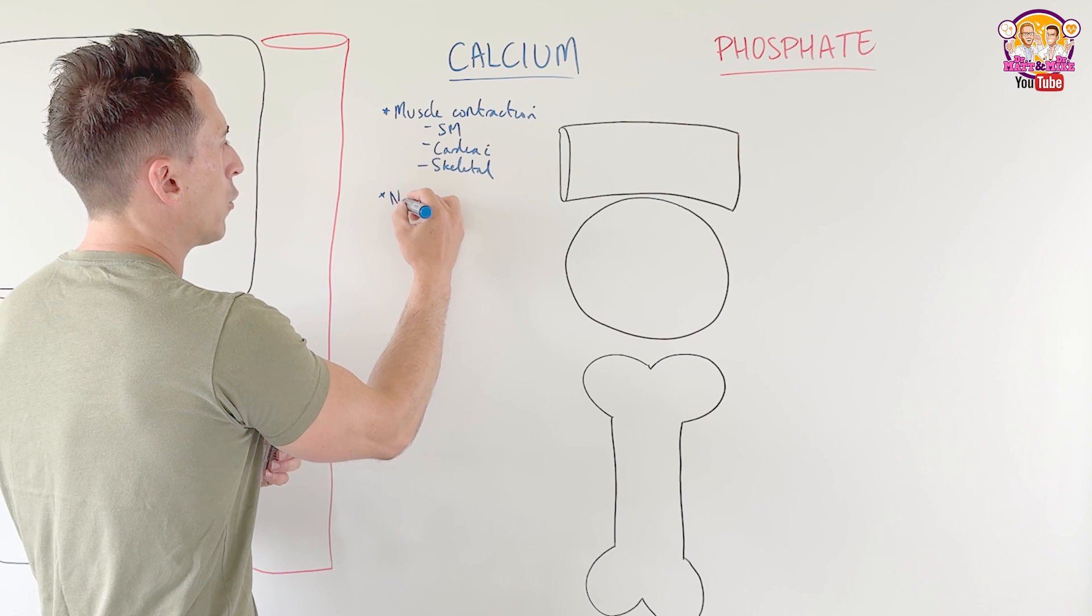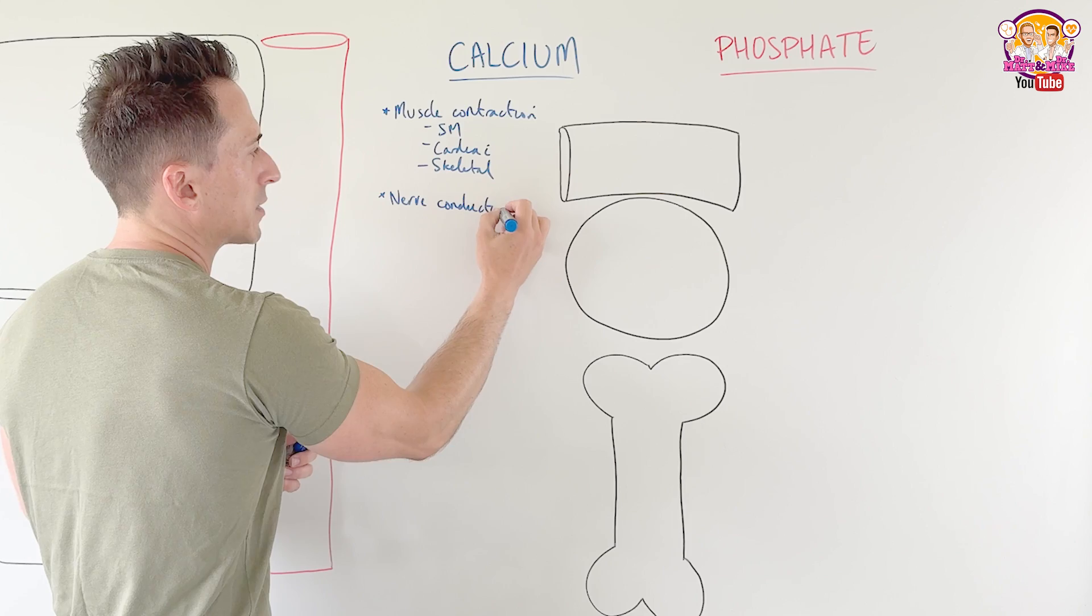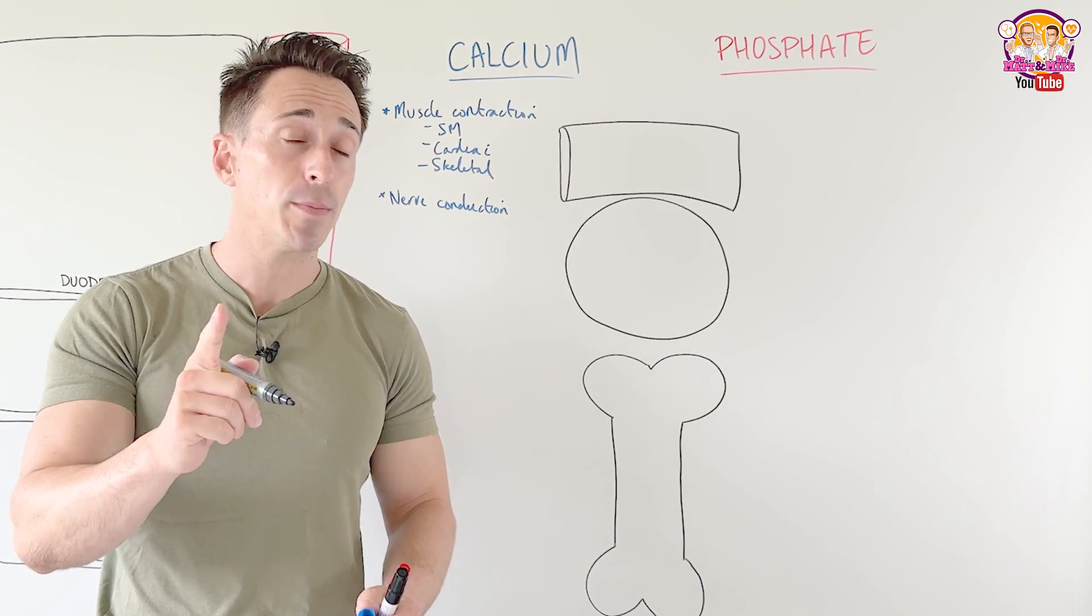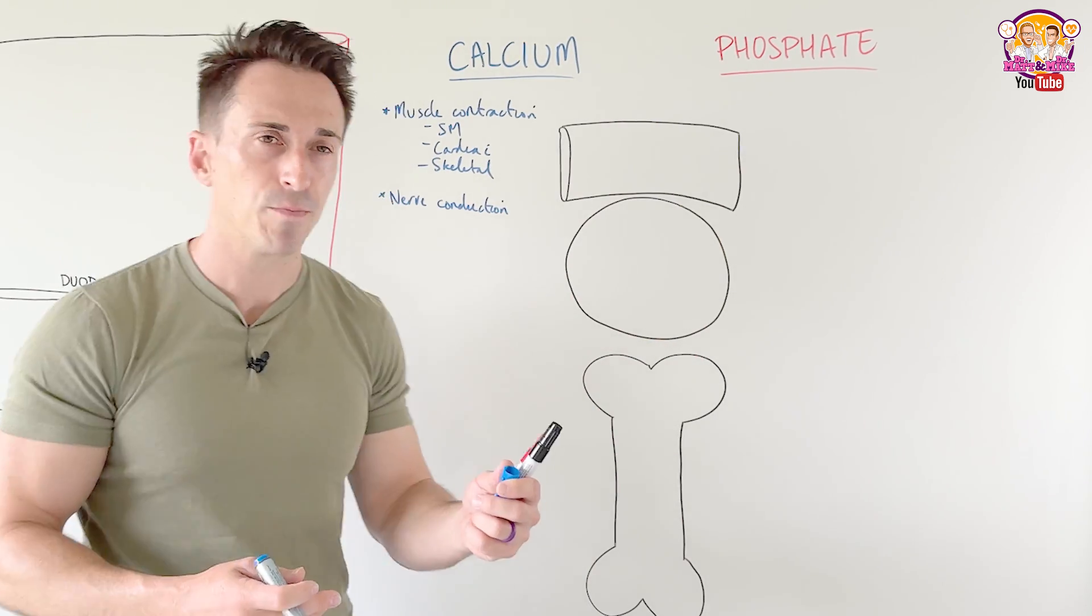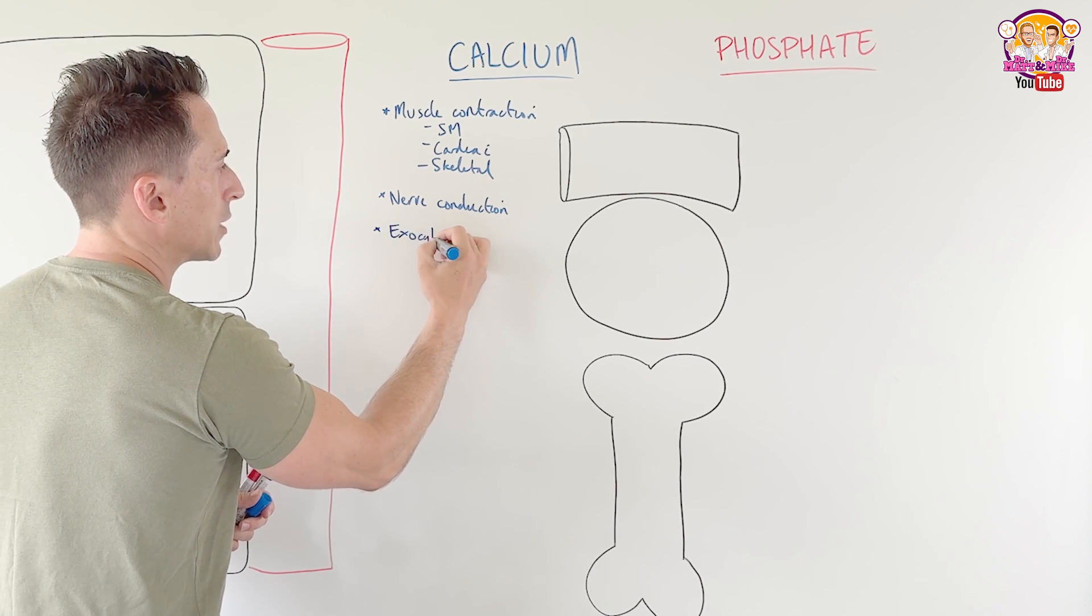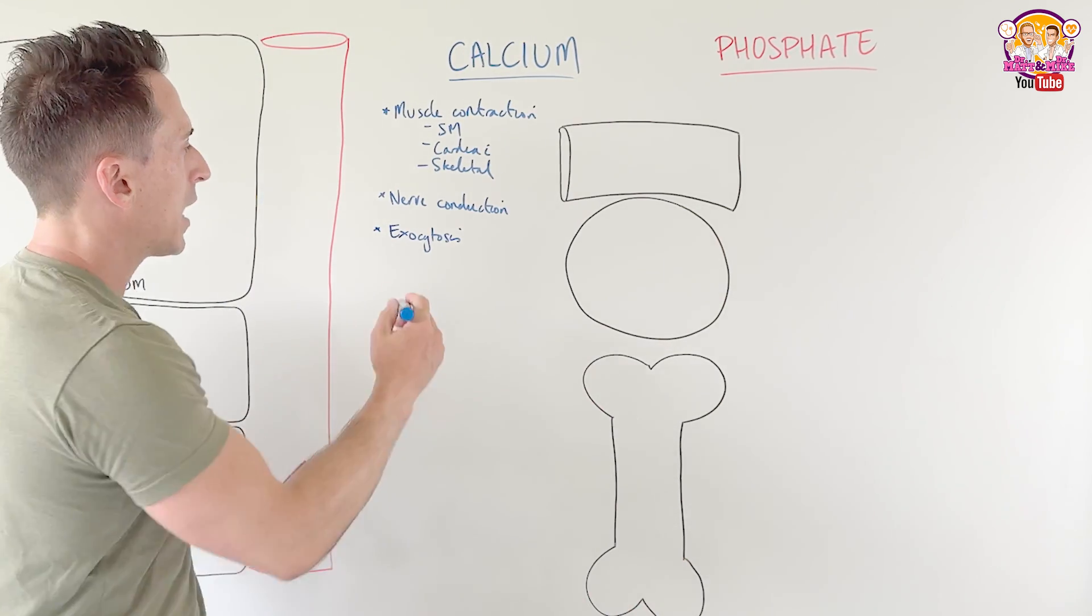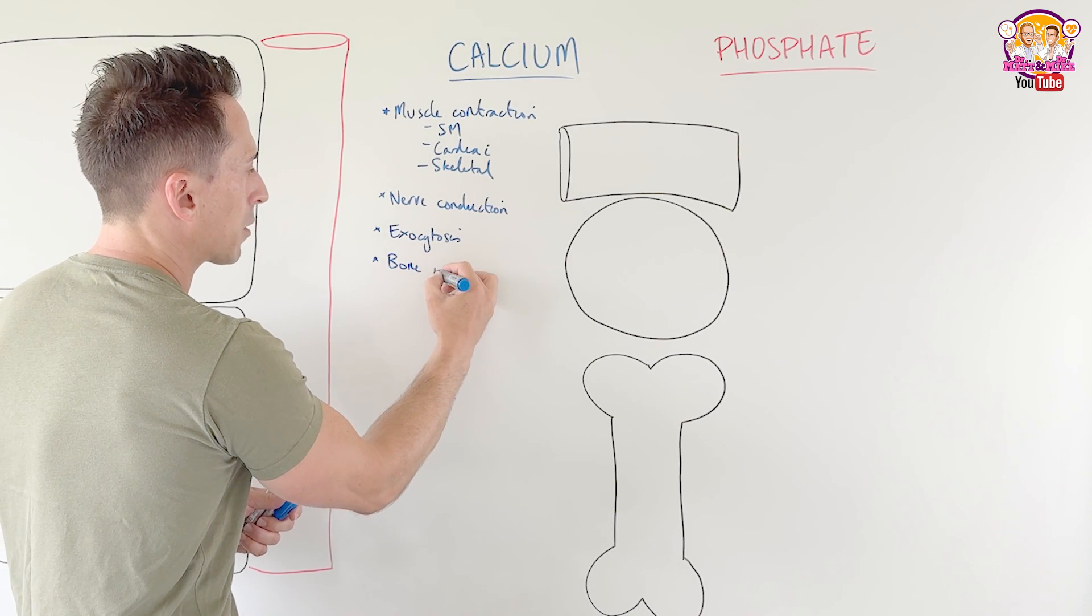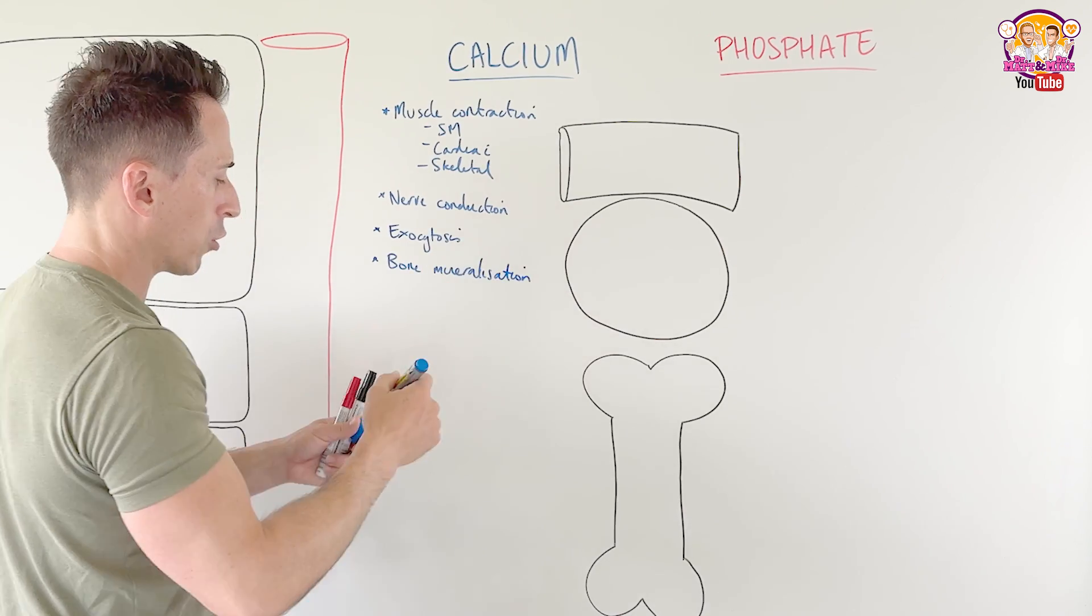It's also really important for nerve conduction and nerve signaling. So in order for a neuron to send a signal and speak to another neuron, it needs calcium. Calcium helps release neurotransmitters and can also stimulate neurons to send signals. Calcium is also really important for a process known as exocytosis, the release of various chemicals and hormones from cells of the body. And finally, calcium is really important when it comes to bone strength in regards to mineralization. It makes bone strong, and it does it along with phosphate.